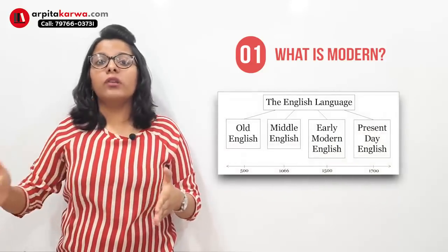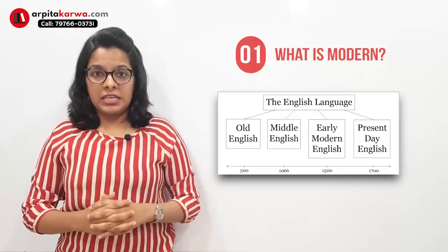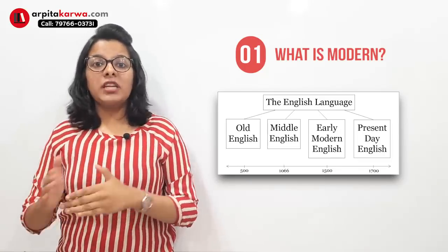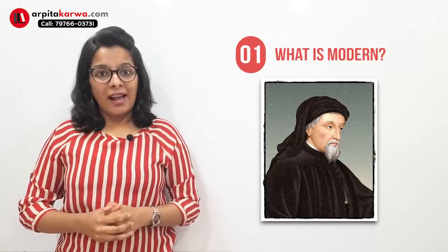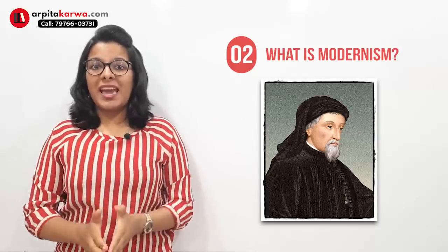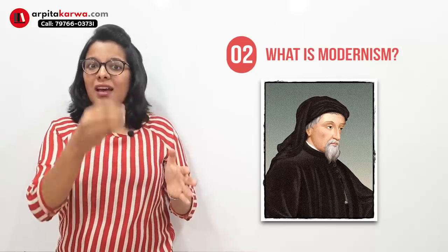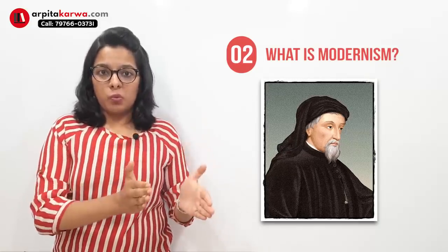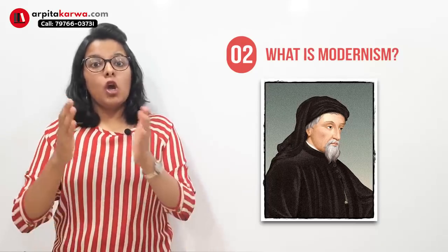From a linguistic point of view, English has gone through three periods: Old English (around 500–1000 AD), Middle English (around 1000–1400), and Modern English (from 1400 onwards). That's why Geoffrey Chaucer is known as the father of Modern English — he was the pioneer of the modern form of the language. But modernism as a literary movement began in 1910, which is very different from the term 'modern.'